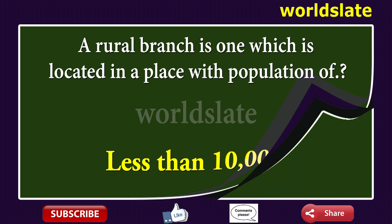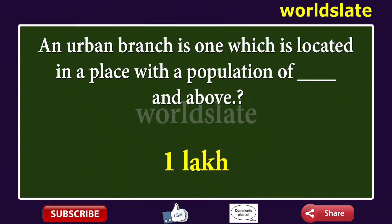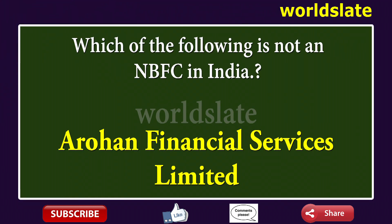Question: A rural branch is one which is located in a place with population of? Answer: Less than 10,000. Question: An urban branch is one which is located in a place with a population of how much and above? Answer: One lakh.